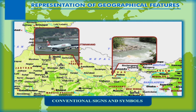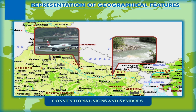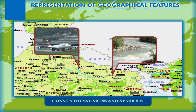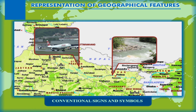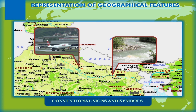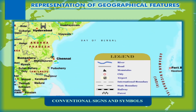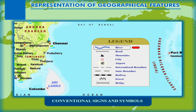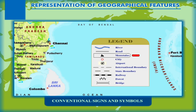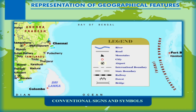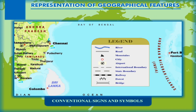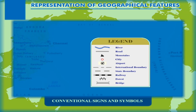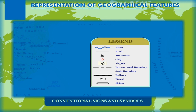Conventional signs and symbols: the size of the map is much smaller than the actual size of the land it represents. Due to this reduced size, it is not possible to show natural and man-made features in their actual shape and size. Therefore, symbols accepted all over the world are used to represent features like rivers, roads, mountains, and cities on the map. These are known as conventional symbols, and they are useful as they facilitate the representation of meaningful information on the map.